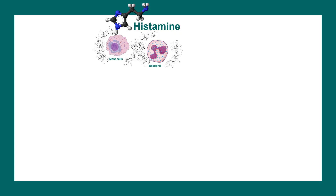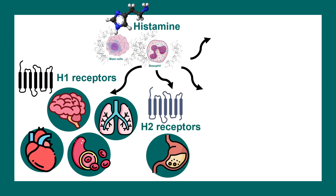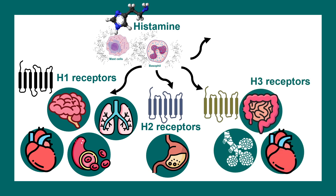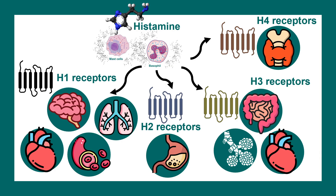Histamine works through histamine receptors, all of which are G protein-coupled receptors (seven transmembrane domain receptors). H1 receptors are enriched in the brain, heart, blood vessels, and lungs. H2 receptors are predominantly in the stomach lining. H3 receptors are present in the intestine, heart, and alveoli. H4 receptors are present in the thyroid gland.